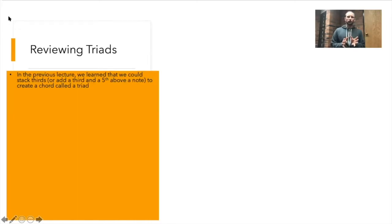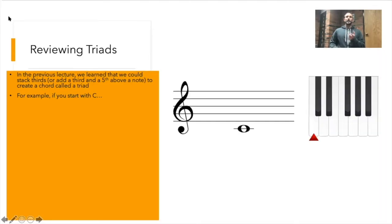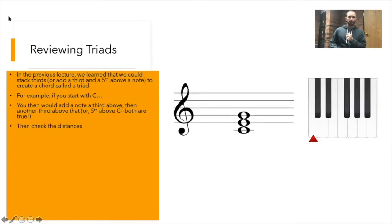In the previous lecture, we learned that we could stack thirds — or add a third and a fifth above a note — to create a chord called a triad. For example, if you start with C, you could add a third above that and another third above that, creating a triad. Let's listen to what this sounds like: C, E, and G.